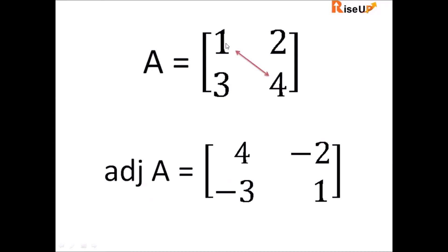What we'll do is transpose the principal diagonal elements. So 4 will go here and 1 will come here. And for non-principal diagonal elements, we'll change the sign — so in place of 2, write down minus 2, and in place of 3, write down minus 3. So this is the adjoint of the given matrix.